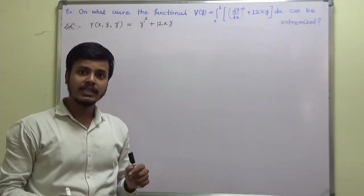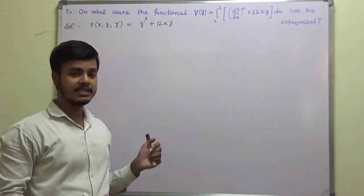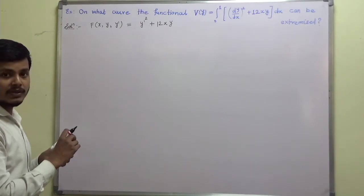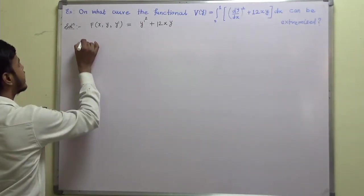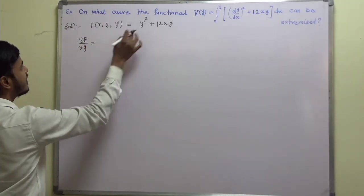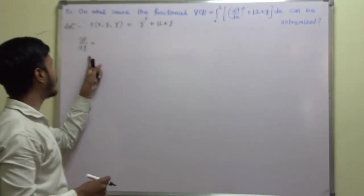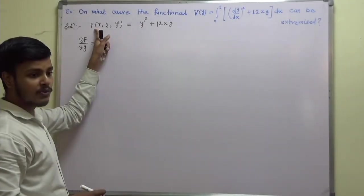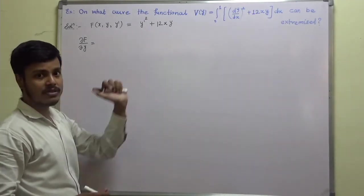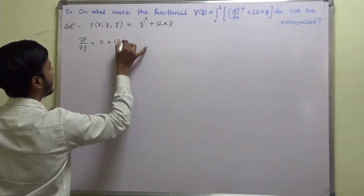So we are going to make use of the Euler's equation because none of the case is applicable over here. So what you can do is you can just find out derivative with respect to y. So what is ∂f/∂y? I am taking partial derivatives. So derivative of f with respect to y, keeping x and y dash constant. So this is 0 plus 12x.